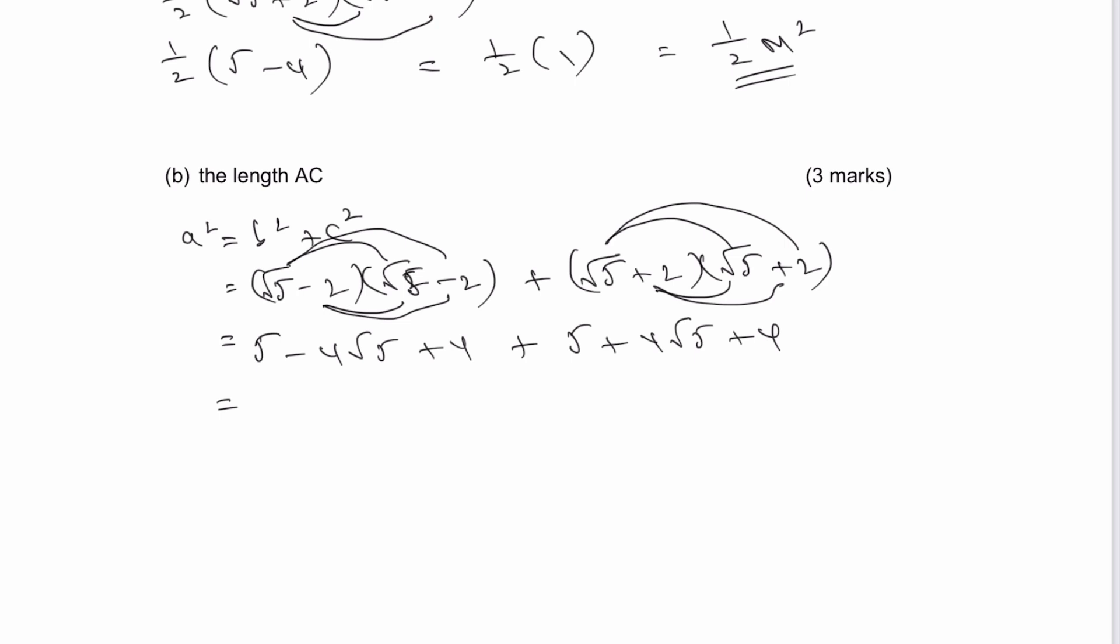And then really it's just a case of tidying everything up. So immediately I can get rid of the surds in this particular case, minus 4 root 5 and plus 4 root 5 is going to cancel themselves out. And what I end up with is 5 plus 4 is 9 plus 5 plus 4 is going to be 18. But don't forget that's the value of a squared equals 18.